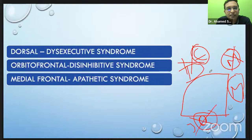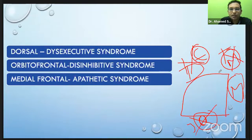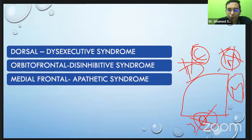Remember: dorsal prefrontal gives disexecutive syndrome; medial prefrontal gives decreased motivation and apathy — apathetic syndrome; and orbitofrontal gives disinhibitive syndrome. In the advanced class, we will touch upon apraxia, agnosia, alexia, and related connections, which are asked in institute exams rather than in NEET.